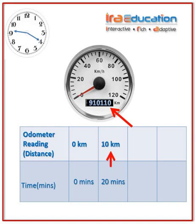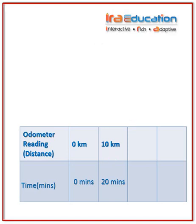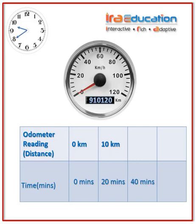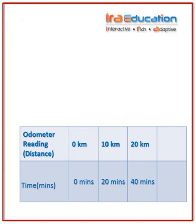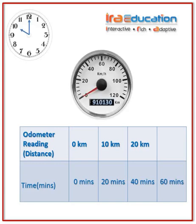Let's fill in the distance as ten kilometers. For the third reading, looking at the odometer after another twenty minutes, it shows twenty kilometers. Let's write this value in the table. The final reading is taken after another twenty minutes, which is sixty minutes from the start. Looking carefully at the odometer again, it shows thirty kilometers. Let's write thirty kilometers in the table.